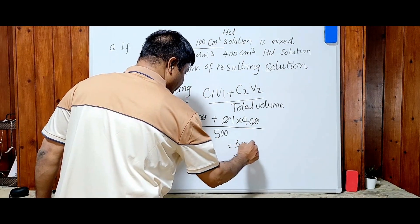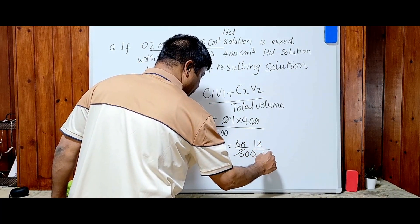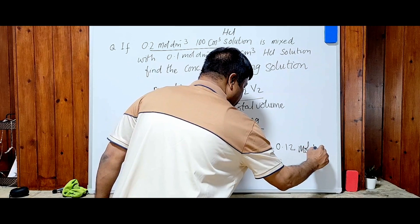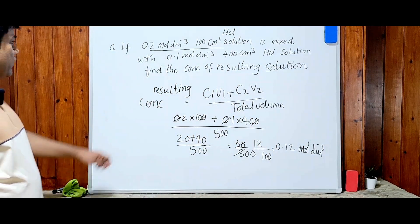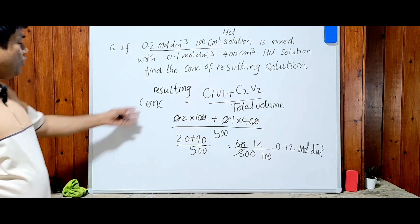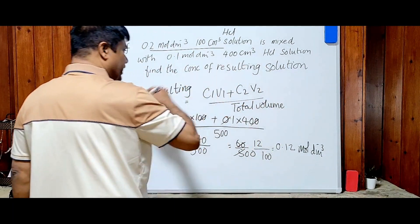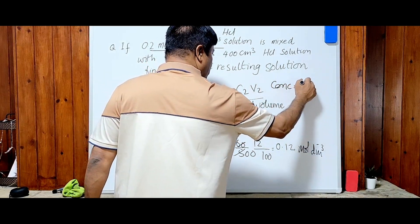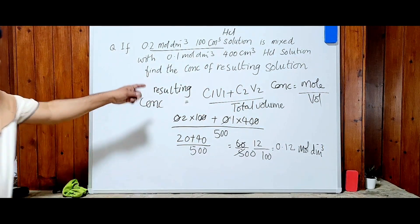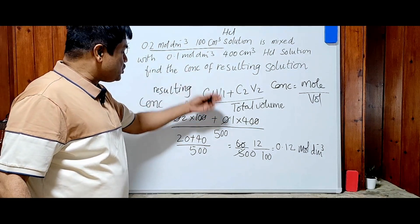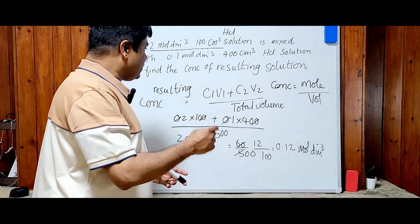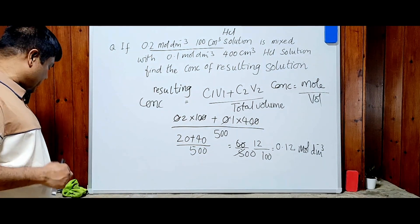60 divided by 500 = 0.12 mol dm⁻³. Notice the resulting concentration is always less than the concentration of the individual acids. Why? Because we are adding more volume. Concentration equals moles over volume — when volume increases, concentration decreases. So the resulting concentration should always be less than the original concentration.